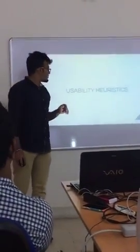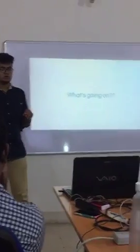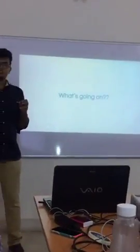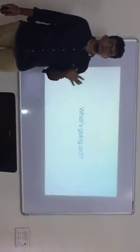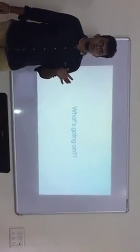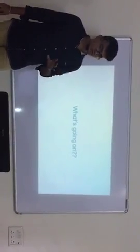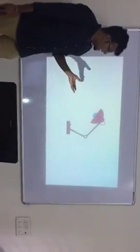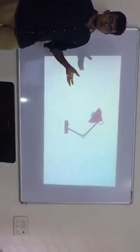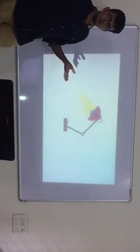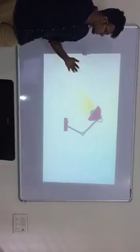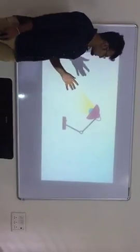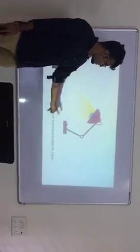The first heuristic is visibility of system status. The system should convey the actions of the tasks done by the users. For example, if you look at a tablet, when you switch it on, you will know whether it is on or off. It basically means the system should communicate to the user.